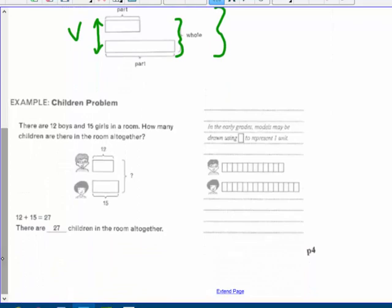So here's an example. The children problem. There are 12 boys and 15 girls in this room. How many children are in the room all together? Well, you know, instead of drawing a person, I would say B for boys and G for girls. There's 12 and 15. How many all together? Oh, in first grade we would add those and we would get that there are 27.